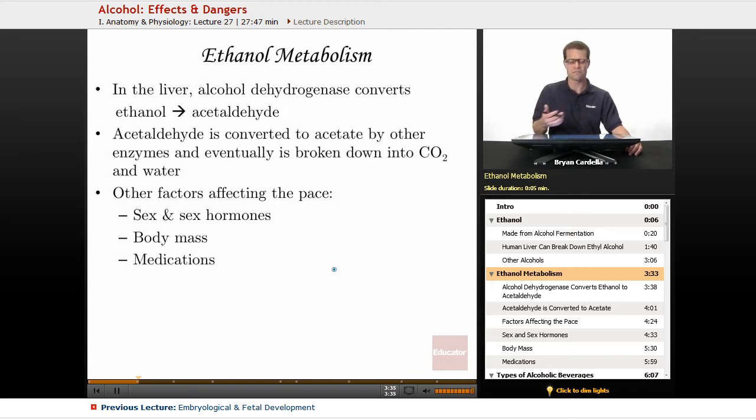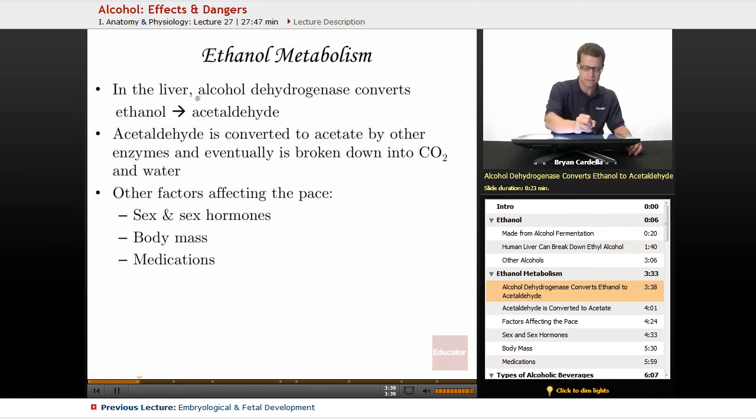So how is ethanol metabolized? How is it broken down in the liver? Well, alcohol dehydrogenase is the main player. This is the enzyme that starts to break apart ethanol. So initially alcohol dehydrogenase in the liver converts ethanol into acetaldehyde. And you're going to hear more about acetaldehyde later on in this lesson related to hangovers.